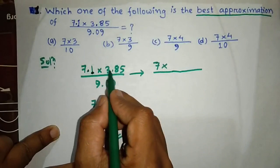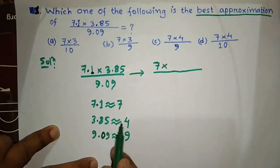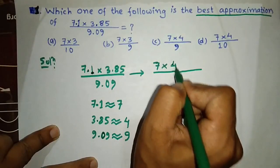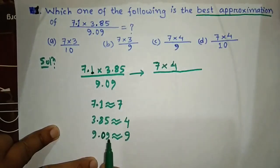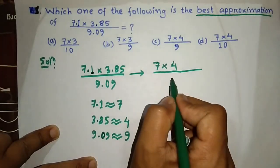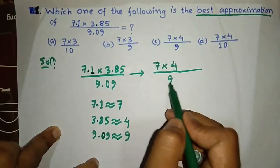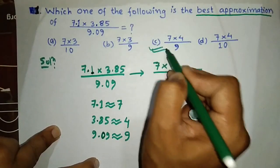Now we are going to see how to work this out. 3.8 rounds to 4, and 9 stays as 9. So 7 into 4 divided by 9 gives us approximately 3. The answer is option C.